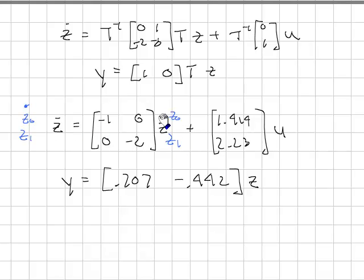Z0 dot is equal to minus 1, Z0 plus 1.41U. It's a single equation right here. It's not coupled. And on the bottom half, we have another single equation. So I have another representation for the system from input U to output Y, but in this case, it's represented by two differential equations which are not coupled.